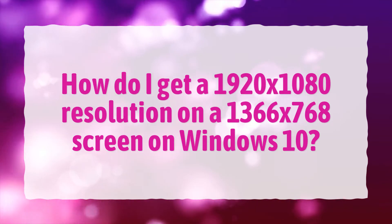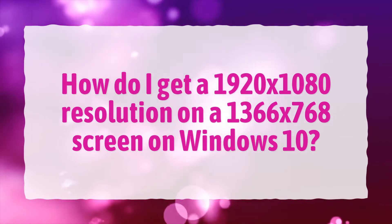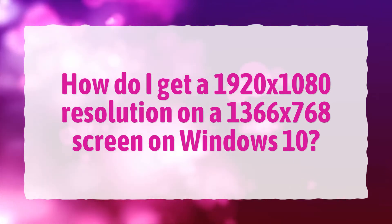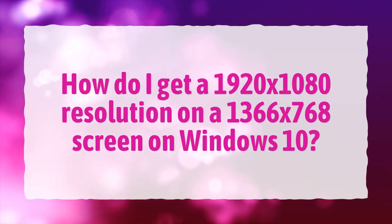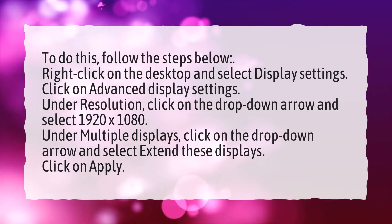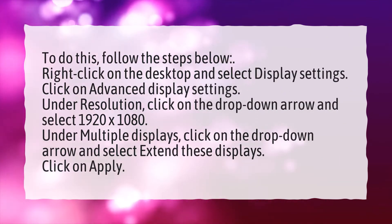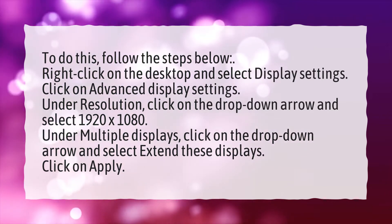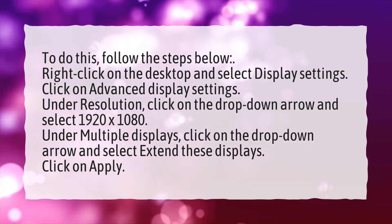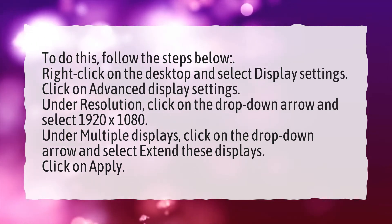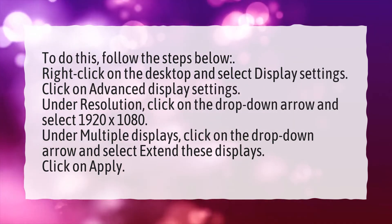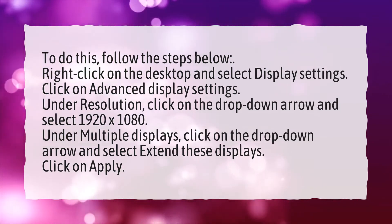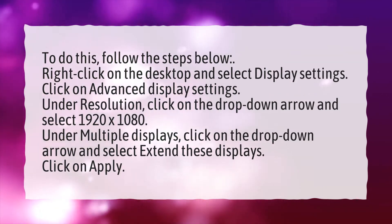How do I get a 1920 by 1080 resolution on a 1366 by 768 screen on Windows 10? To do this, follow the steps below: right-click on the desktop and select Display Settings, click on Advanced Display Settings, under Resolution click on the drop-down arrow and select 1920 x 1080. Under Multiple Displays, click on the drop-down arrow and select Extend These Displays, then click Apply.